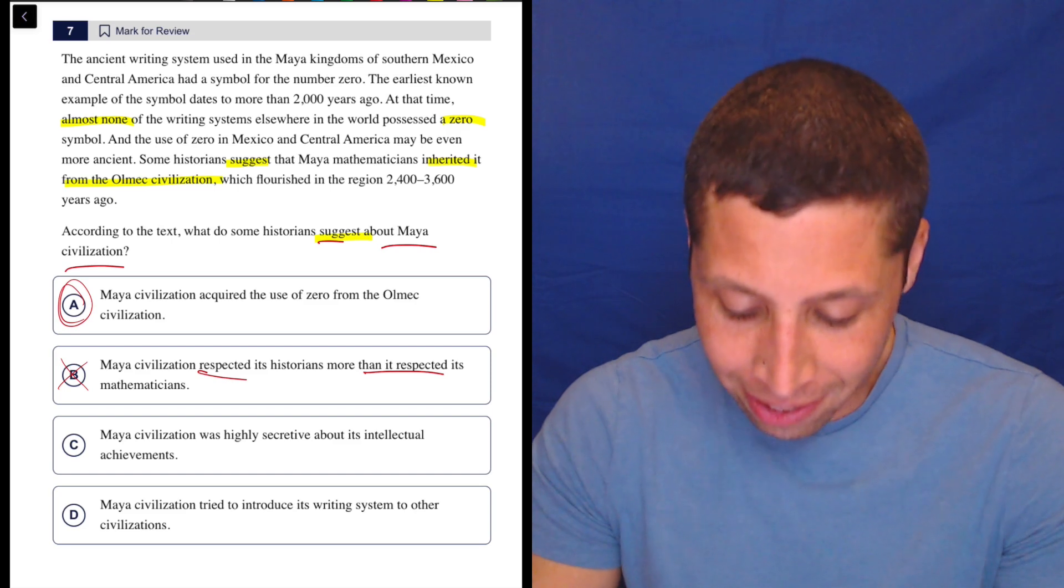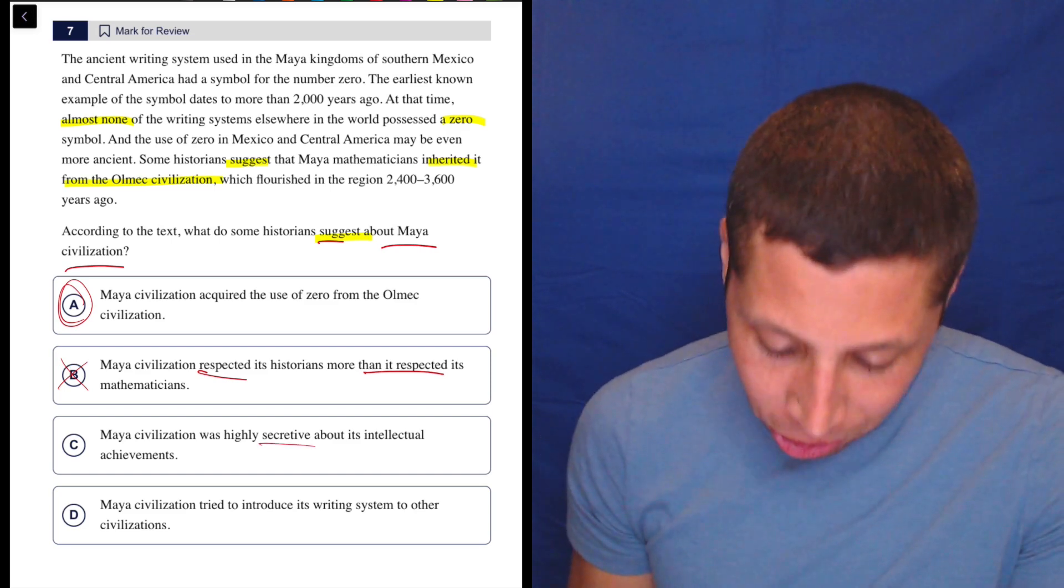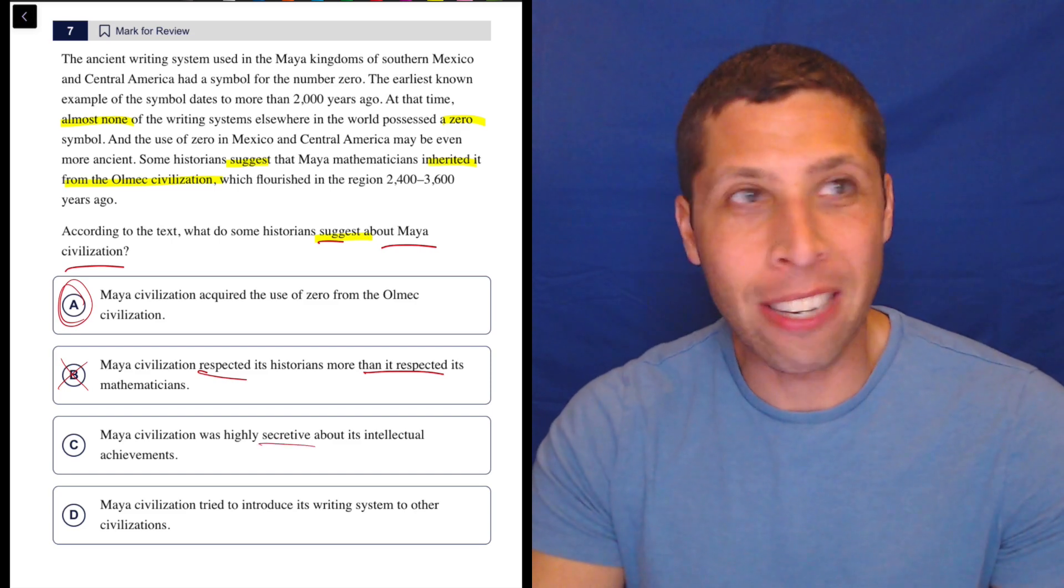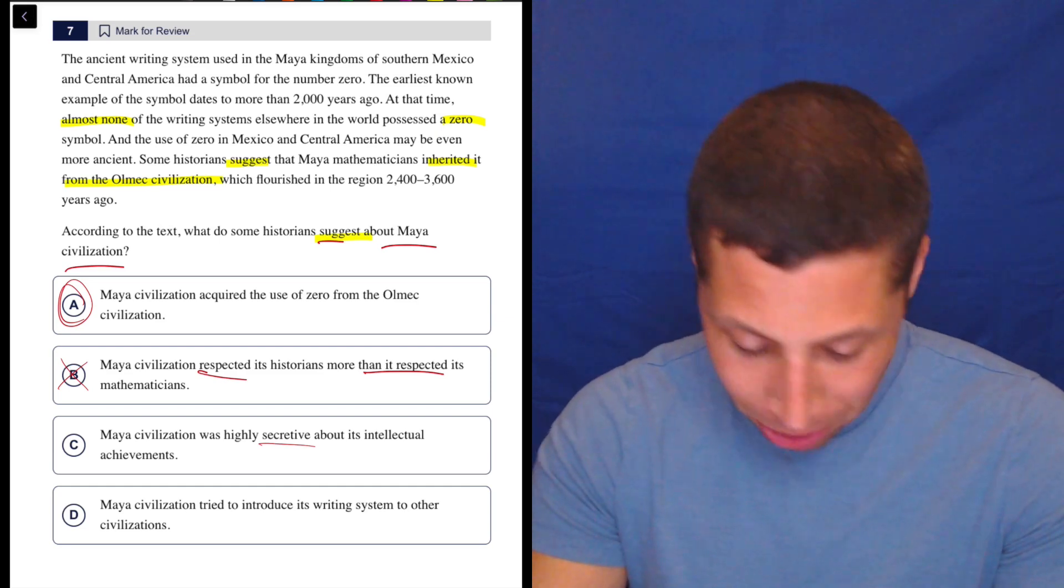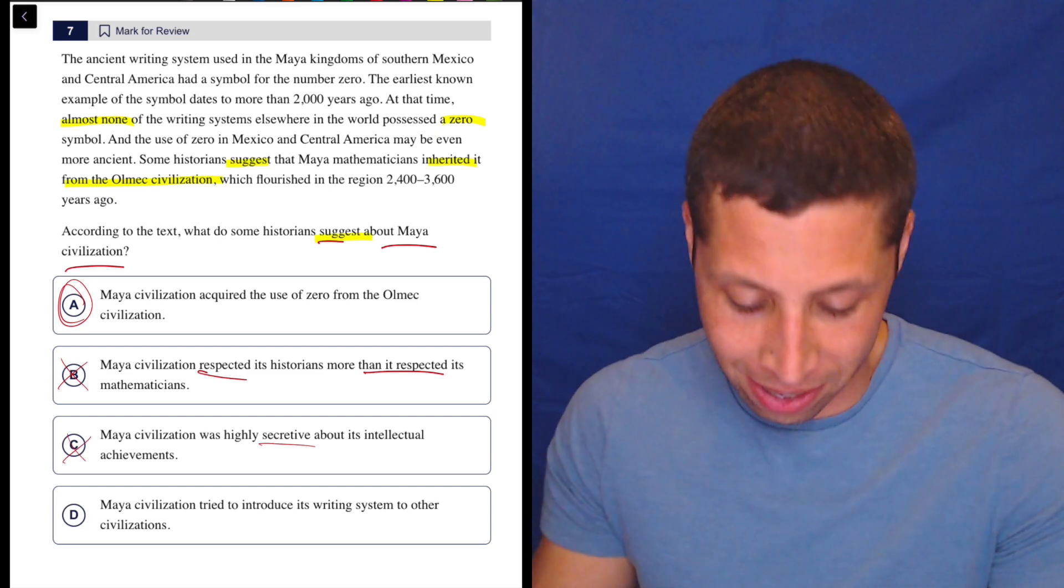C says Maya civilization was highly secretive about its intellectual achievements. What? They didn't want to tell anybody that they knew what zero was? What are we talking about? This makes no sense. There's no mention of secrets in here.